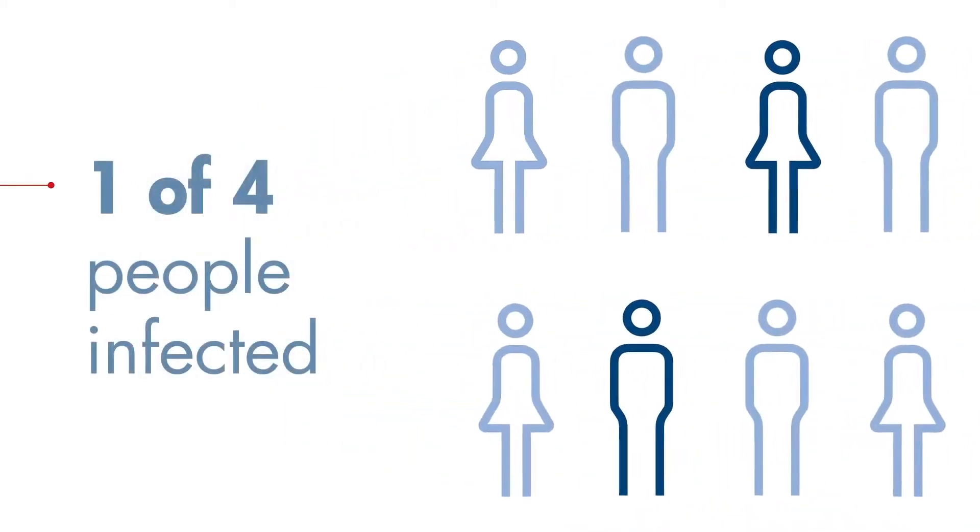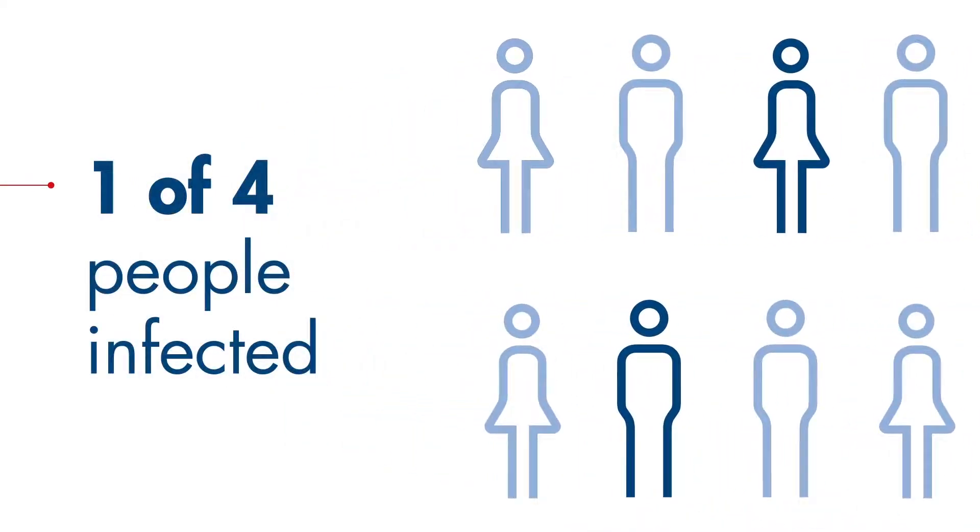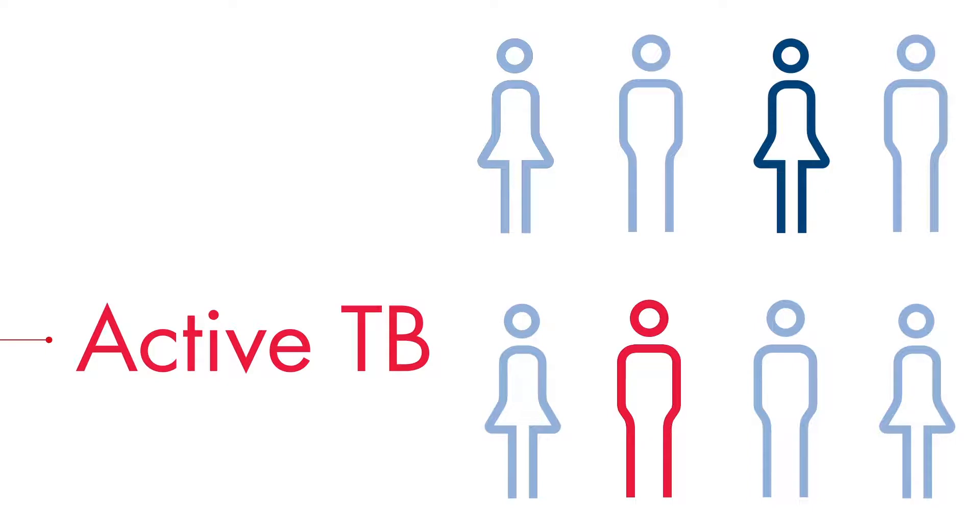One fourth of the world's population are believed to be infected with latent TB. Left unidentified and untreated, latent TB can progress to contagious active TB, continuing the vicious cycle of disease transmission.